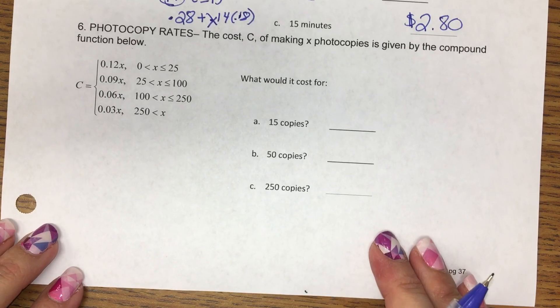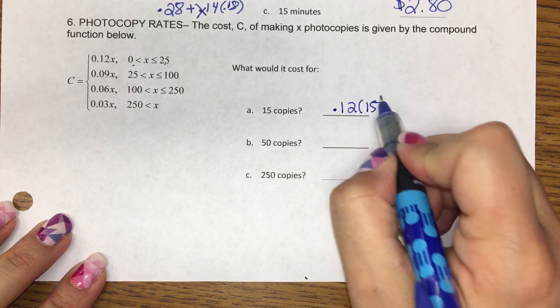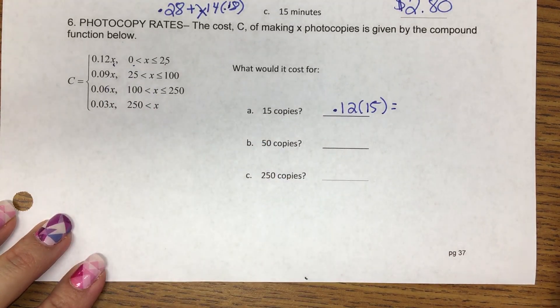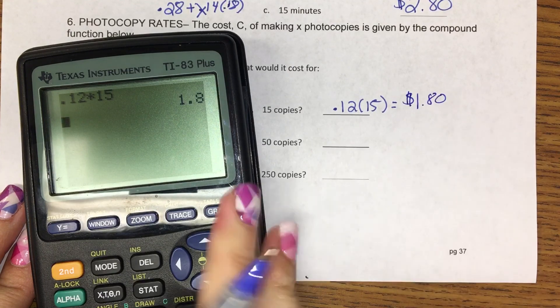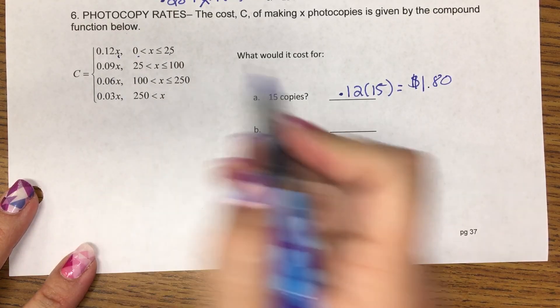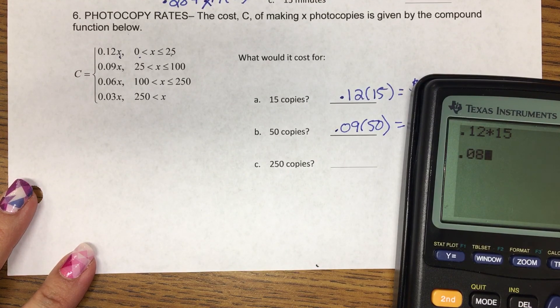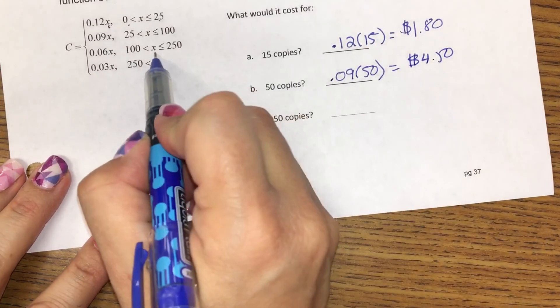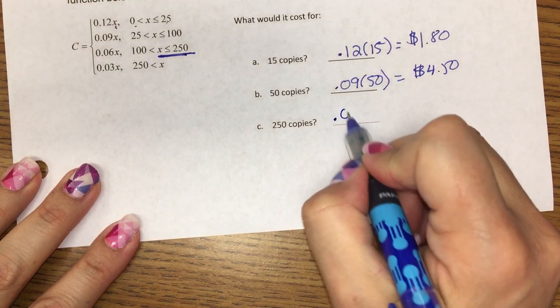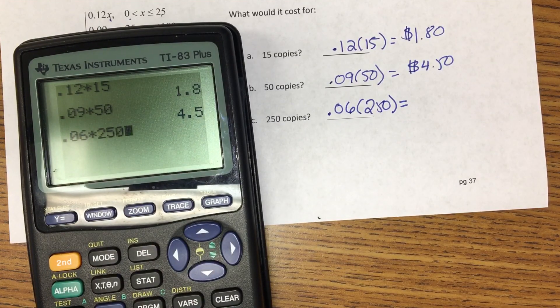And copying. 15 copies is between 0 and 25, so I'm going to plug in 15 to the X here. Calculator. $1.80. 50 copies is in the 2nd piece. $4.50. And 250 copies. This is the or equals part. So it goes with the 6 cents a copy. $15.